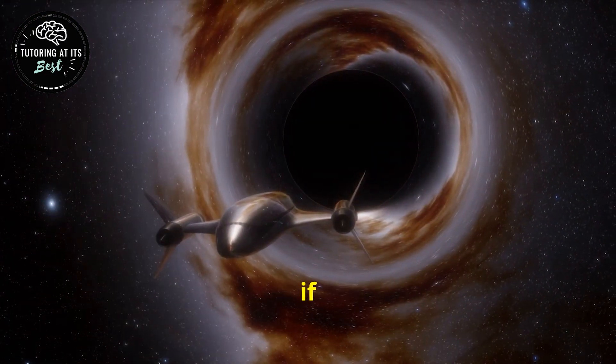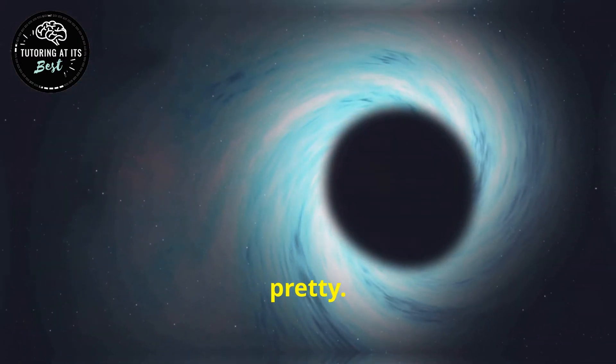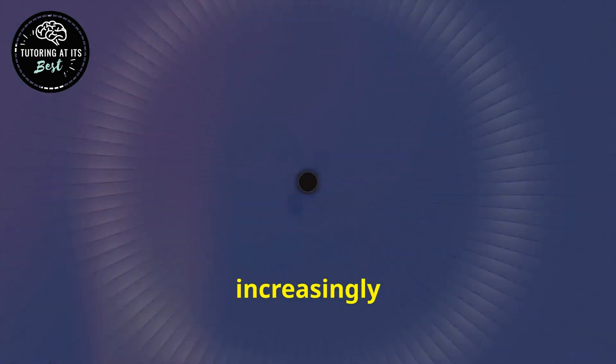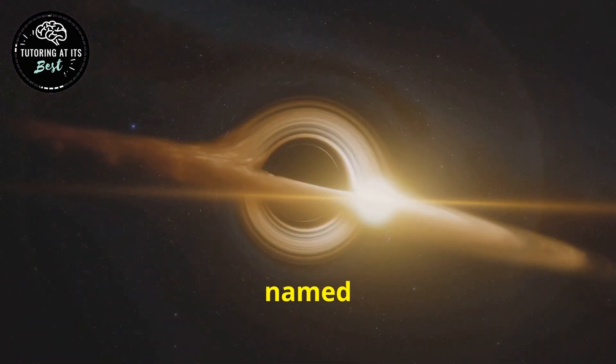What would happen if you were to fall into a black hole? Well, it wouldn't be pretty. As you approach the event horizon, the difference in gravity between your head and your feet would become increasingly extreme. You would be stretched out like spaghetti, a process aptly named spaghettification.